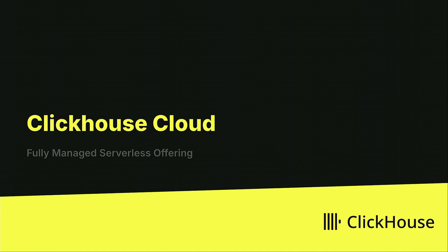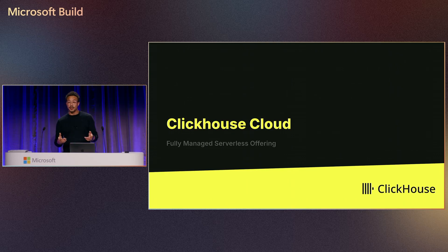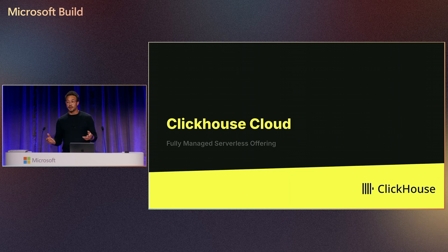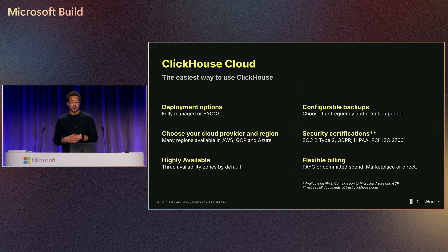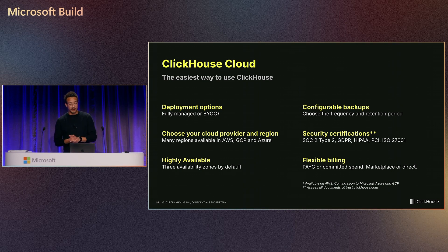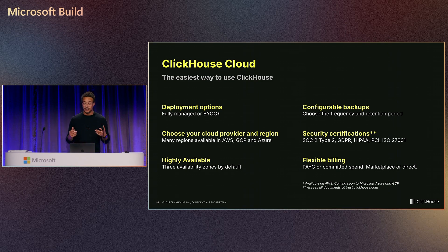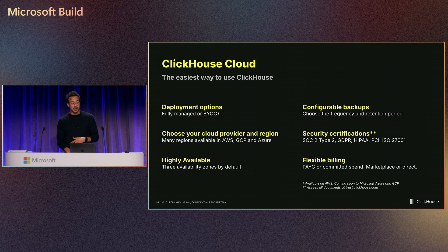In terms of ClickHouse Cloud, it's the fastest way to get started with ClickHouse. It's our fully managed serverless offering, available directly in the Azure marketplace. Head over to clickhouse.com for a 30-day free trial with $300 worth of credit, which can be used to deploy a service on Azure. We're also expanding to bring-your-own-cloud — come talk to us if you're interested. We're available on all three major CSPs and deployable in all regions, with a ton of security certifications. You can purchase through the marketplace, use your committed spend, or sign up with a credit card. We have a handy cost calculator at clickhouse.com/pricing, and come to our booth 415 to learn more about marketplace and committed spend.